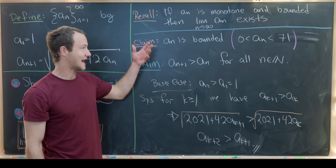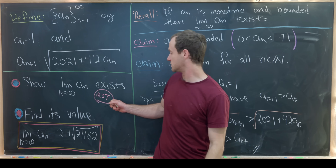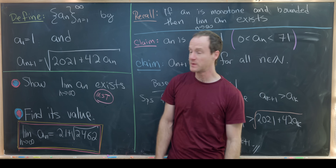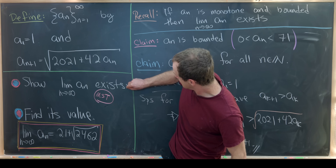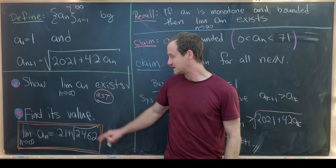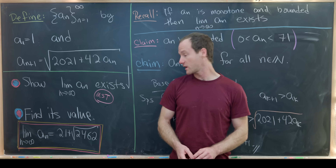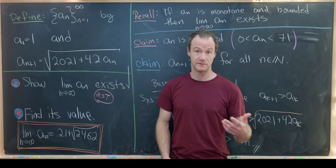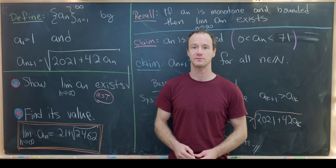We've satisfied all conditions of the Monotone Sequence Theorem — the sequence is monotone and bounded — so the limit exists. That means the value we calculated earlier is indeed the limit: 21 plus the square root of 2462.